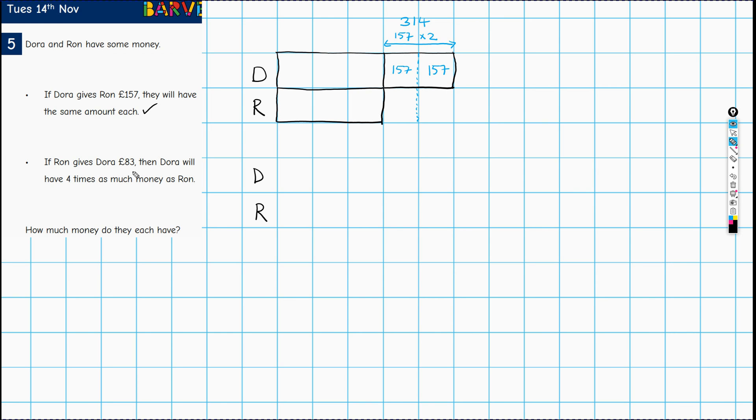So again, we have Dora and Ron. And it says if Ron gives Dora 83 pounds, then Dora will have four times as much money as Ron. I'm just going to draw one unit or one part for Ron. And if Ron has one, then in this scenario, Dora would have four times as much. Obviously these are not to scale. So that's Dora having four times as much.